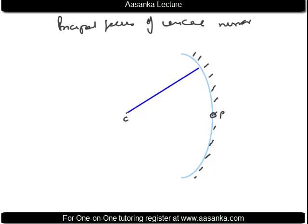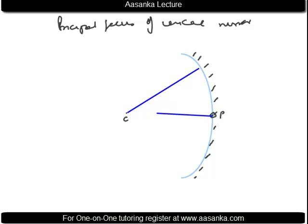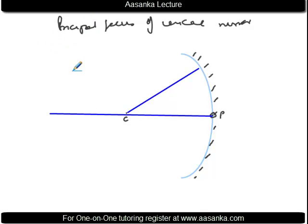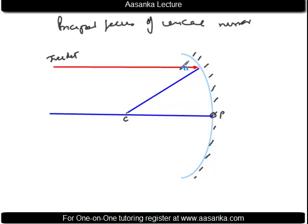This has an important implication. Wherever you take a point — here, here, or here — the line from center of curvature will be normal everywhere. You know the principal axis is yet another normal, passing through the pole and center of curvature. Now, if rays of light are coming from infinity, this incident ray will get reflected, and the angle made by the reflected ray will equal the angle made by the incident ray with the normal.